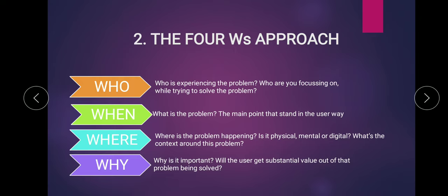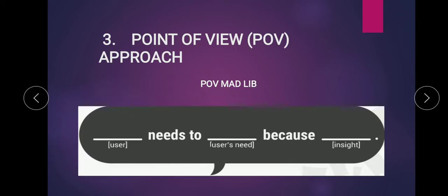The next approach is POV Mad Libs. Mad Libs are trigger questions that you can prompt yourself with to get answers about the various problems a person faces. You ask the user about a need and you get a 'because' — for example, you need to do this task because it's very important for such-and-such purpose. The trigger words 'needs to' and 'because' help you come up with a proper problem statement.